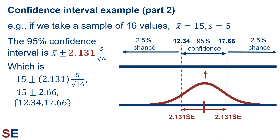Back to our example where we took a sample of 16 values and obtained a sample mean of 15 and a sample standard deviation of 5. The 95% confidence interval would be the sample mean plus or minus 2.131 standard errors, which gives us 15 plus or minus 2.66, which gives us a 95% confidence interval of 12.34 to 17.66. Based on our data, we'd be 95% confident that the true population mean is somewhere between 12.34 and 17.66, with only a 5% probability that it is outside of that interval.